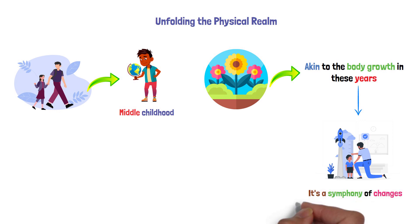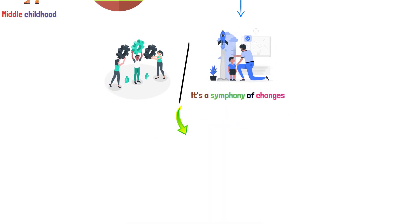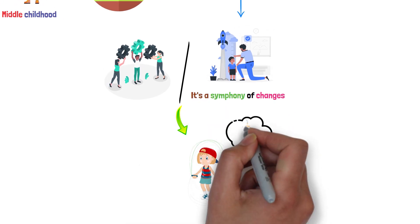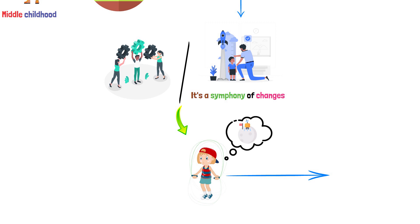And oh, the agility and coordination that come into play. Remember when jumping rope felt like orchestrating a lunar landing? That's motor development in action, a dance of muscles and mind.